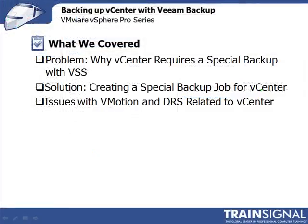Let's summarize what we learned in this video. We started with the problem of why vCenter requires a special backup with VSS: when VSS is activated, that virtual machine seemingly freezes for a few seconds while the file systems and data are backed up, which is a problem for the Veeam Backup console since it uses vCenter to know about the virtual infrastructure. The solution is to create a special backup job for vCenter, mapped directly to the IP address of an ESX server.